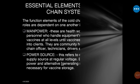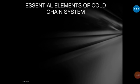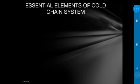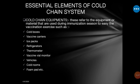Last is the cold chain equipment, which falls under material. Examples include the cold box, vaccine carrier, ice pack, refrigerator, thermometer, vaccine vial monitor, vehicles, cold room, and foam pad.